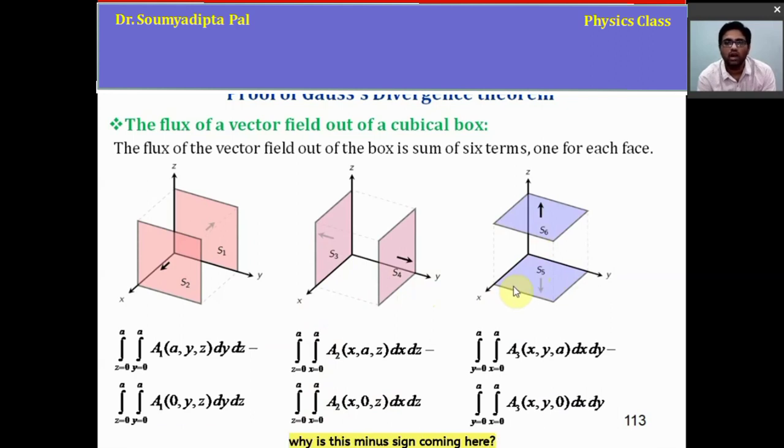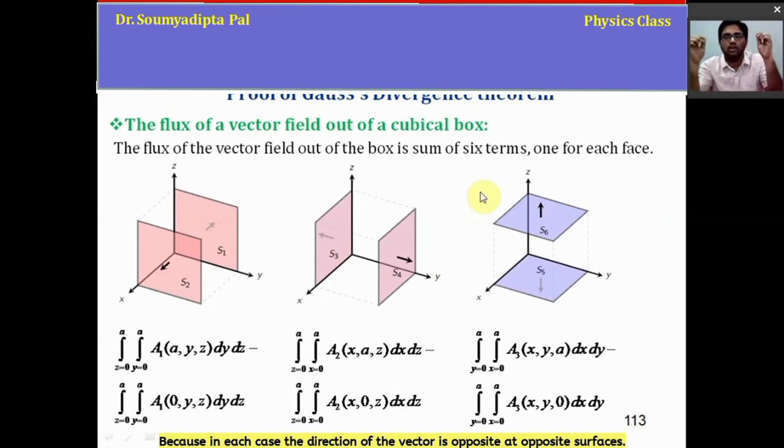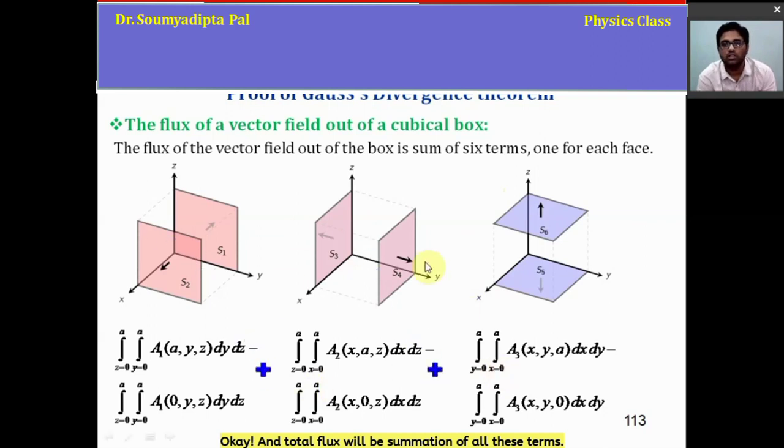Now why is this minus sign coming here? Because in each case, the direction of the vector is opposite at opposite surfaces. And total flux will be summation of all these terms.